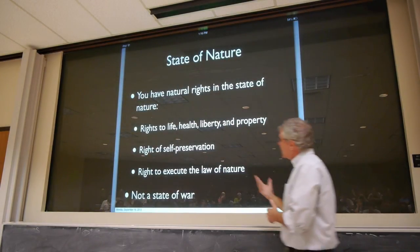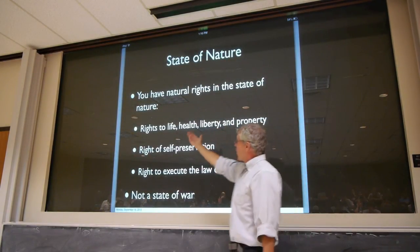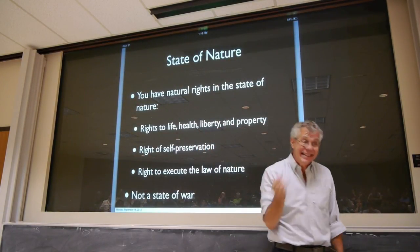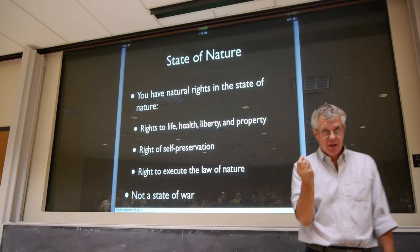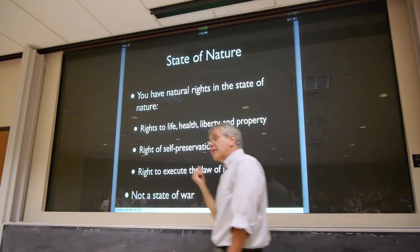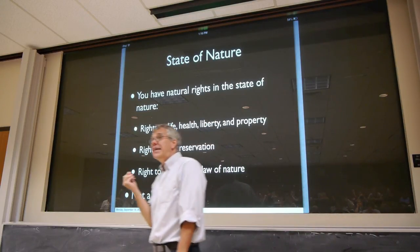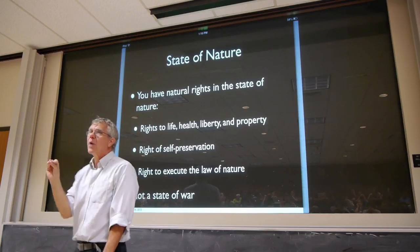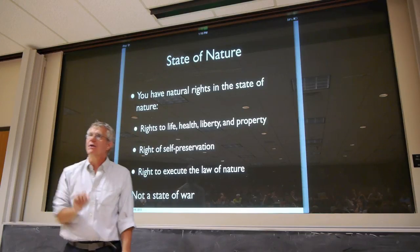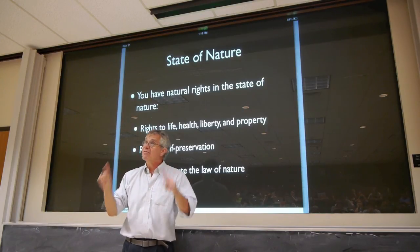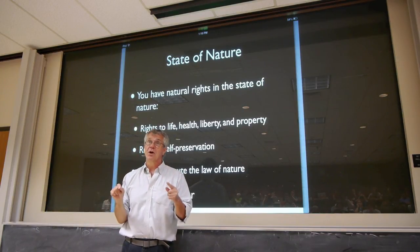So even in Austin under that circumstance where there is no government authority at all, it would be wrong for me to kill you, wrong for me to steal from you, wrong to punch you and damage your health, wrong to kidnap or enslave you. There is a moral law that exists even in the state of nature. Moreover, since I would have rights to life, health, liberty, and property in the state of nature itself, and a right of self-preservation, it means I would have the right to execute — that is, enforce — the law of nature.